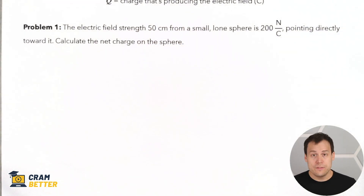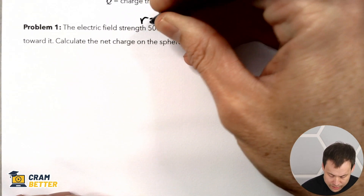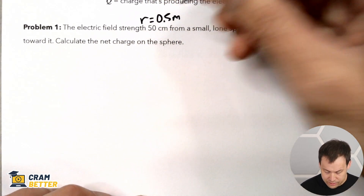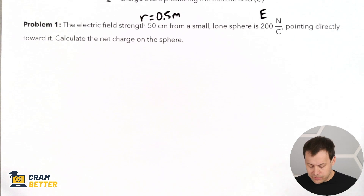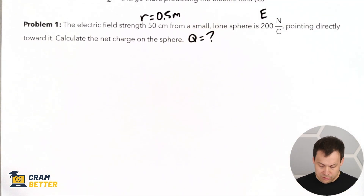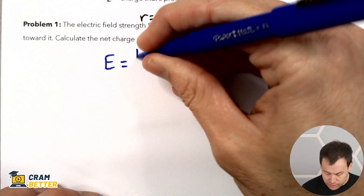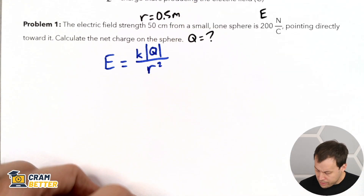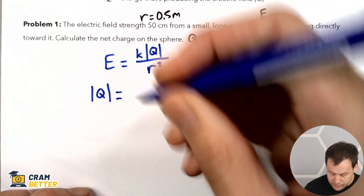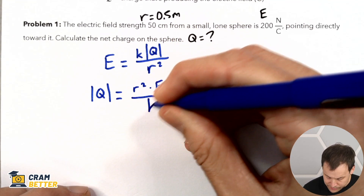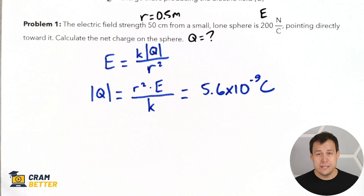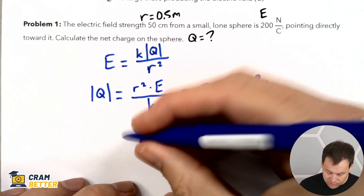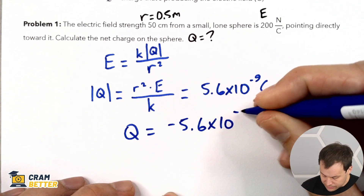The electric field strength 50 centimeters from a small lone sphere is 200 newtons per coulomb. So R is 0.5 meters, and our electric field strength is 200 newtons per coulomb. It points toward the sphere, so we already know the sphere is negative. We want to calculate the actual net charge Q on that sphere. Using our formula: E equals K times absolute value of Q divided by R squared. Rearranging: Q equals R squared times E divided by Coulomb's constant. Plugging into the calculator, we get 5.6 times 10 to the negative 9 coulombs. However, since the electric field points inward toward it, the actual value of Q is negative 5.6 times 10 to the negative 9 coulombs.